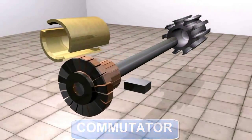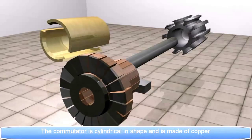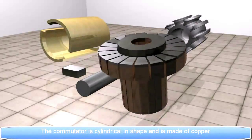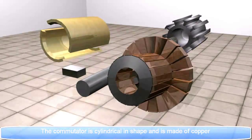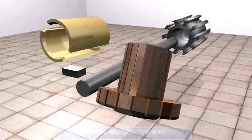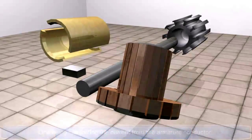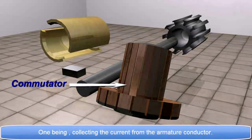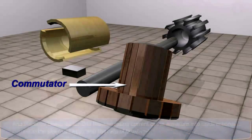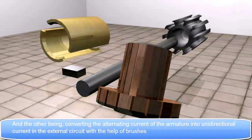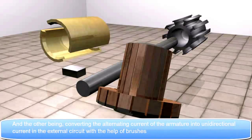Commutator. The commutator is cylindrical end shape and is made of copper. It performs two basic functions. One being collecting the current from the armature conductor. And the other being converting the alternating current of the armature into the unidirectional current in the external circuit with the help of brushes.